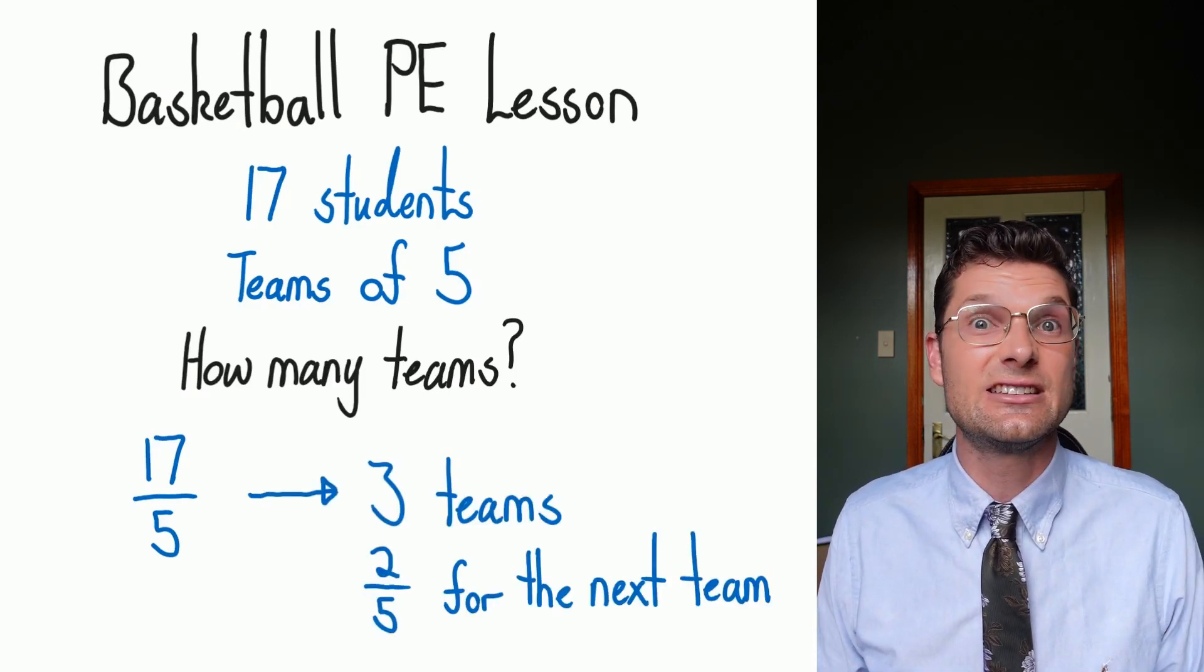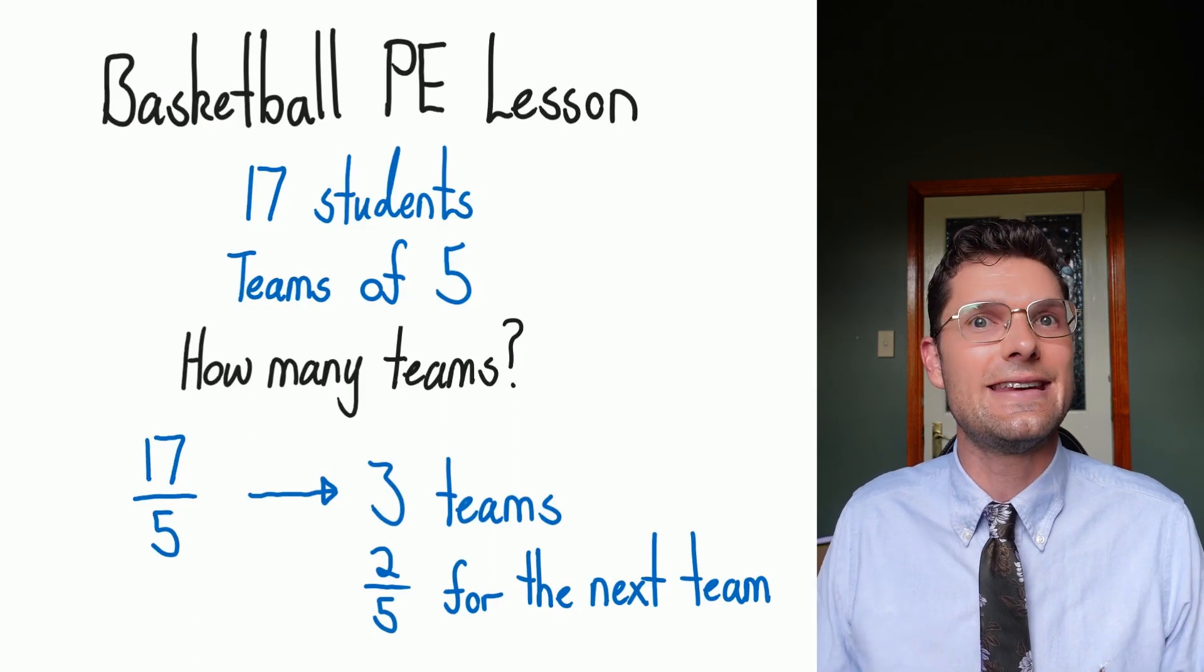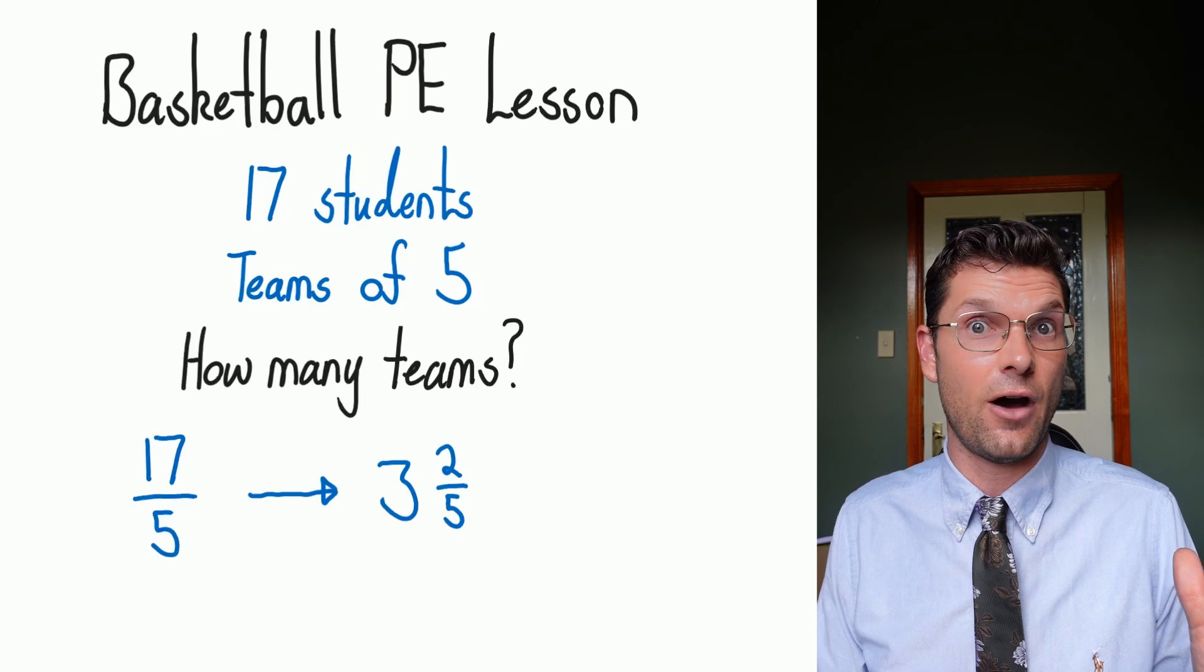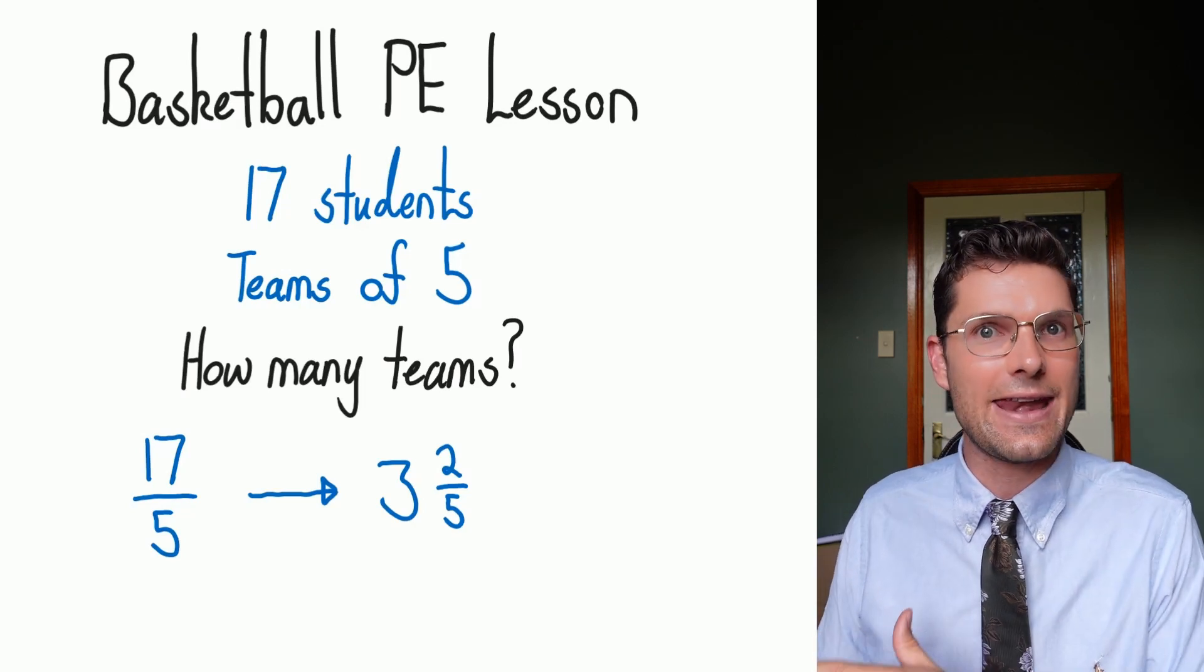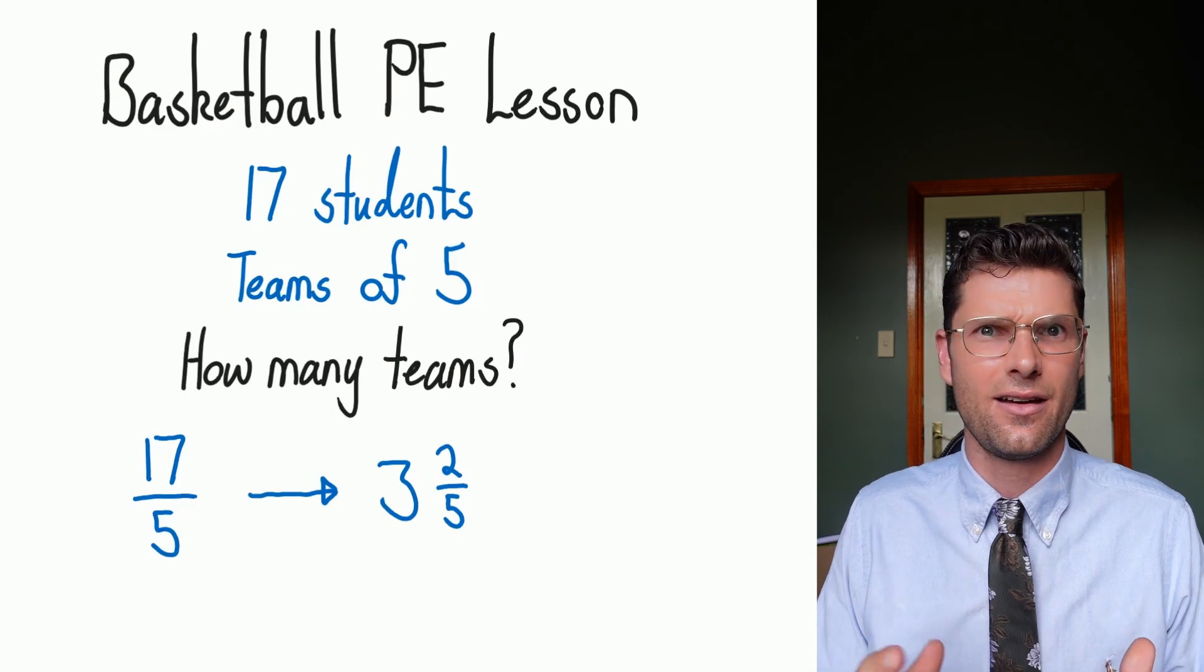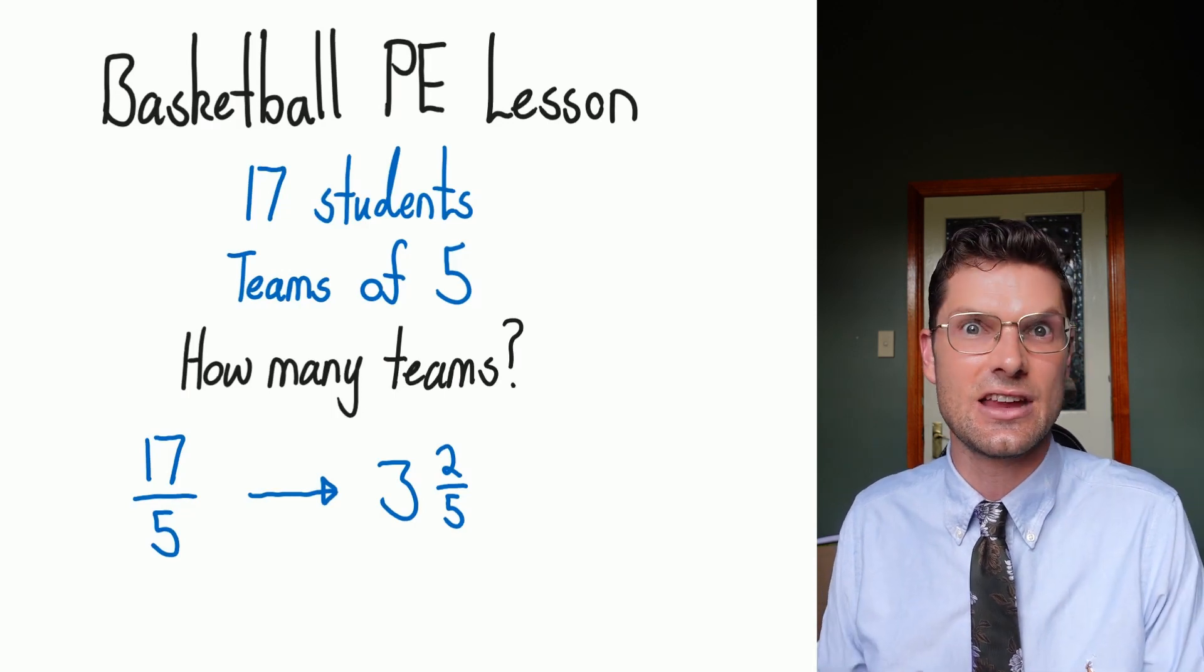If we were waiting for more people, I would say I had two fifths of that next fourth team. So I've got three full teams, three five out of fives, and then two out of five for that next team. Three and two over five becomes three two fifths. This is just a mixed numeral.